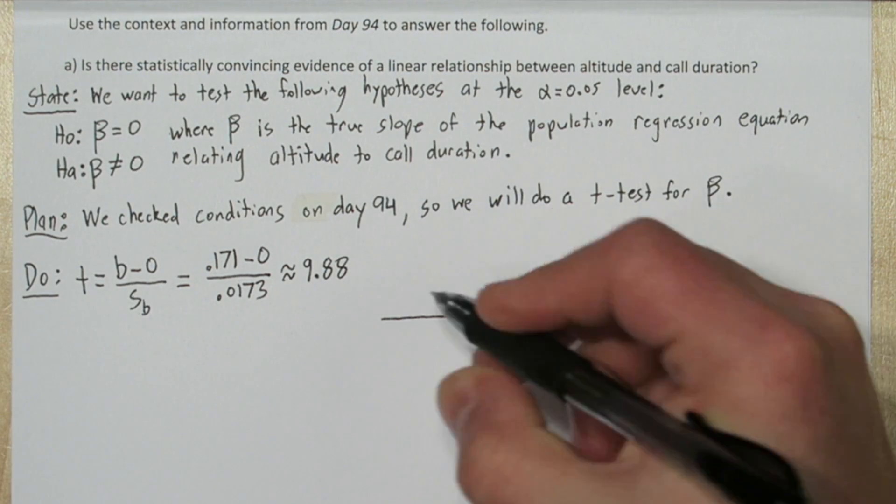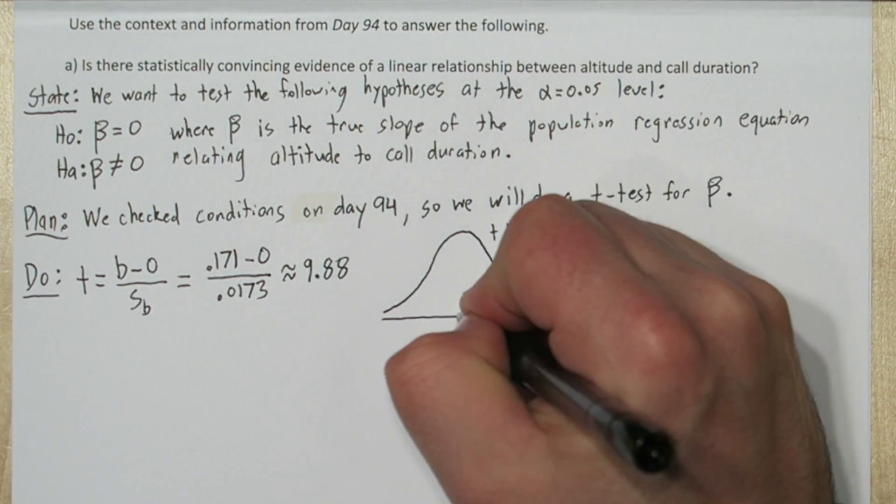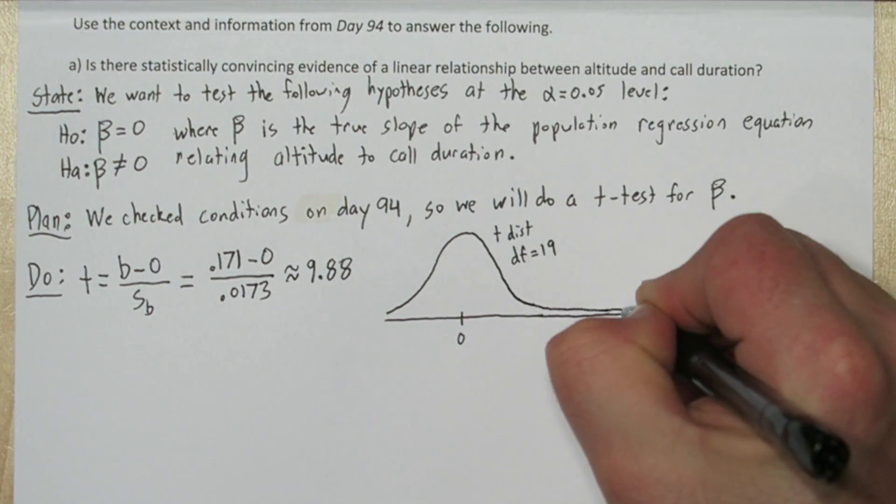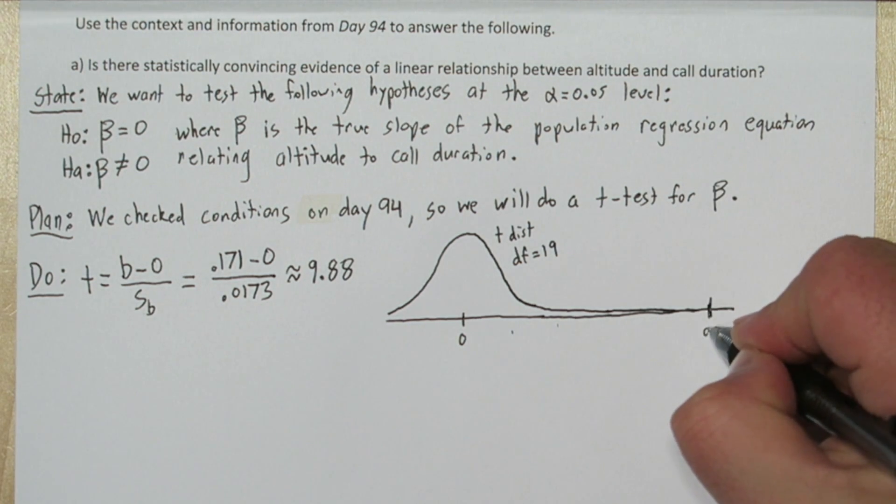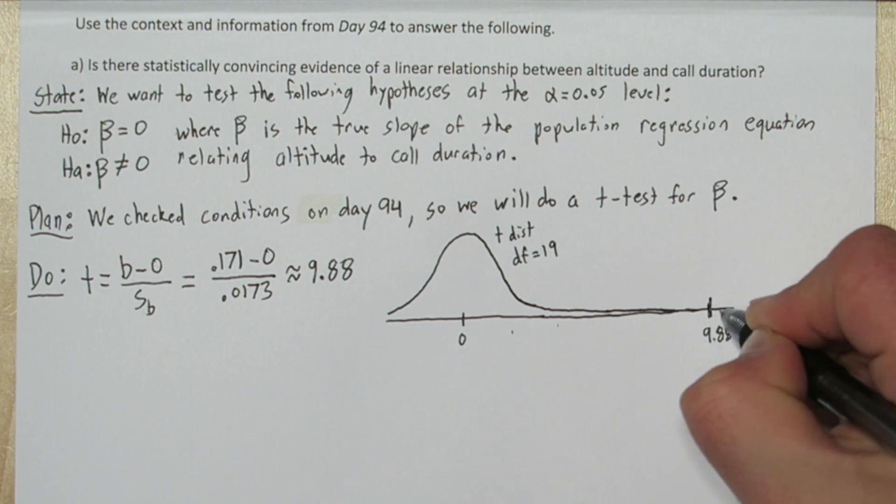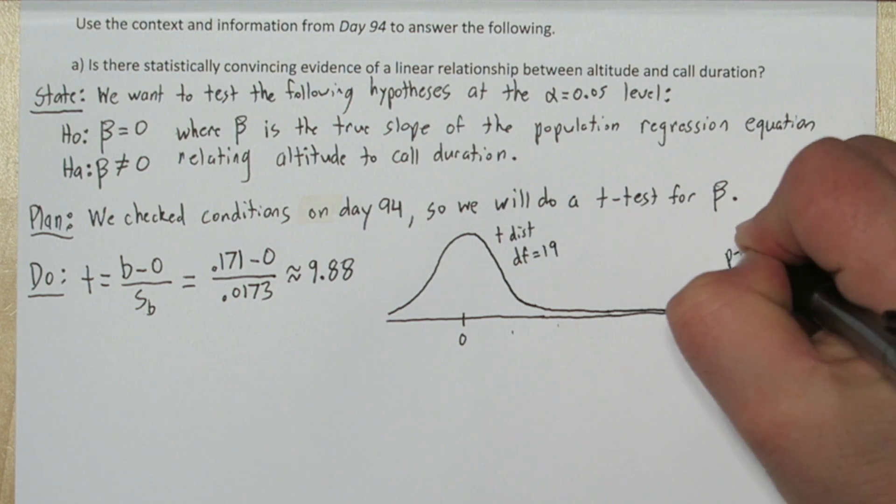So we're going to draw a t-distribution with 19 degrees of freedom. Our test statistic 9.88 would be way out here. So our p-value is the area to the right of it. It looks like not much area, probably a value pretty close to zero.